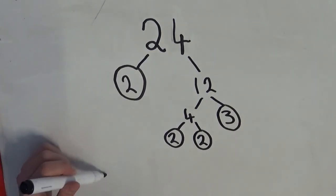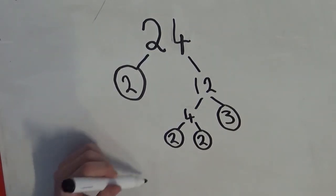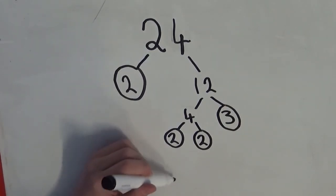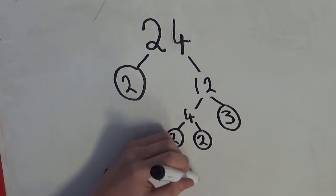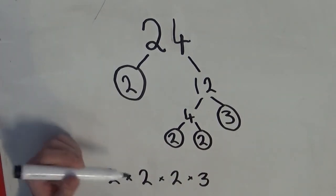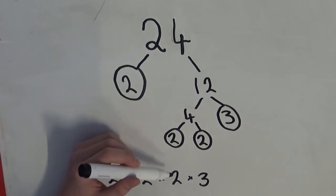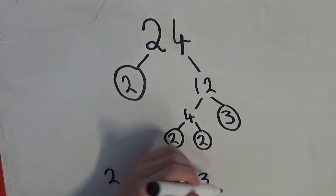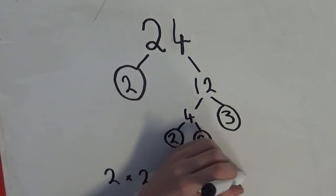Now, if I times these prime factors together, I should get 24. 2 times 2 is 4, 4 times 2 is 8, and 8 times 3 is 24.